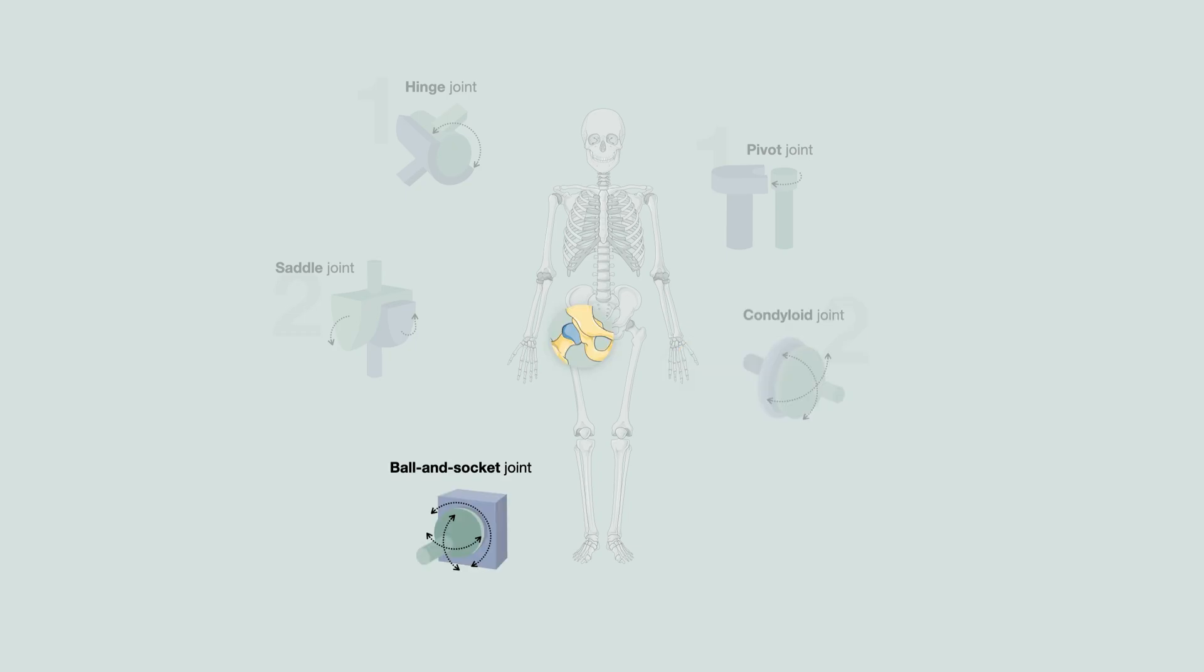Like in hinge joints, the ball and socket joint occurs when a convex end of one bone articulates with a concave end of another. However, in a ball and socket joint, the convex end is like a ball permitting movement in multiple planes. This joint permits flexion, extension, abduction, adduction, and as well as rotation.